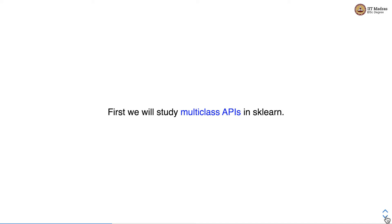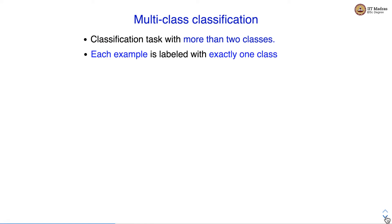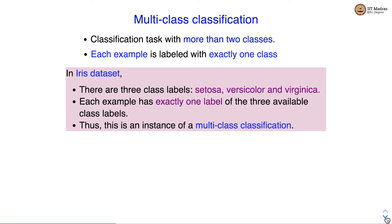We will now study multi-class APIs in sklearn. Multi-class classification is the classification task with more than two classes, where each example is labeled with exactly one class. For example, in the iris dataset there are three labels — setosa, versicolor, and virginica — and each example has exactly one label out of these three available class labels. Hence, the iris dataset is an instance of a multi-class classification problem.